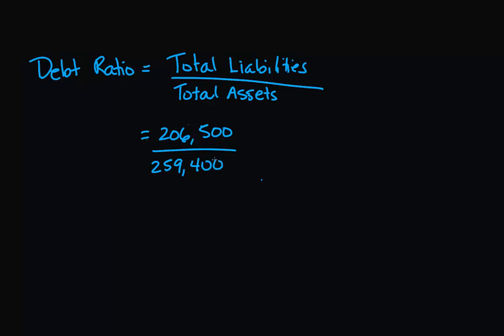That gives us a debt ratio of 0.8, or you can express that as 80%. It really depends on the industry and type of business what your expected debt ratio is going to be.